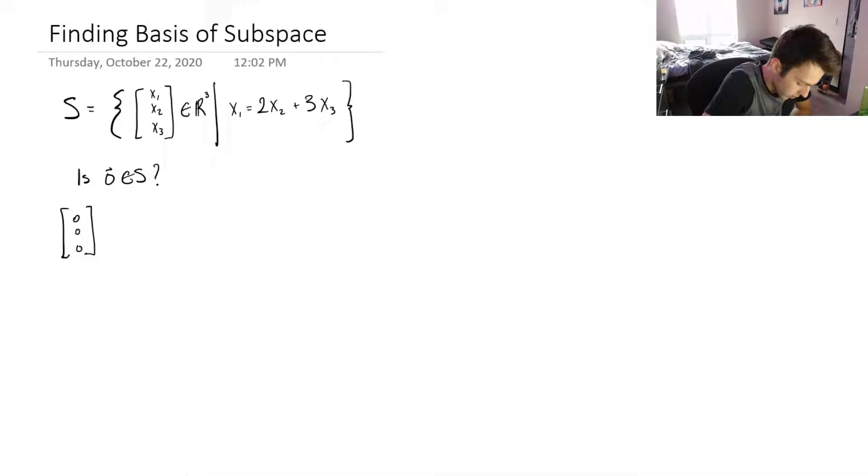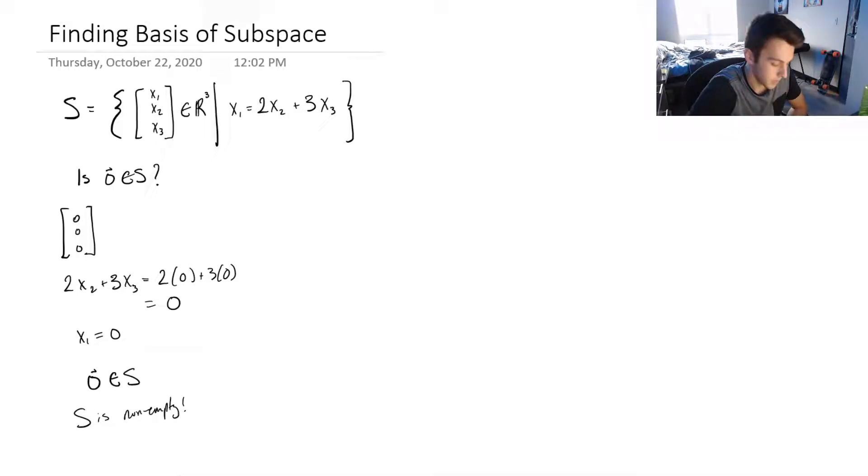So 2x2 plus 3x3, this is just 2 times 0 plus 3 times 0, which is equal to 0. And I know x1 is also equal to 0, so I've got 0 equal to 0, which means that 0 is within S, and S is non-empty. Great, okay,